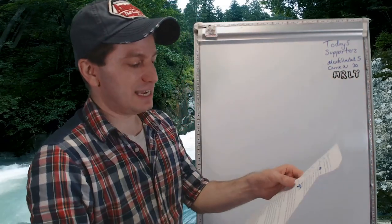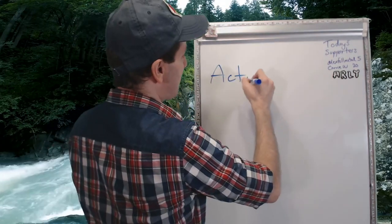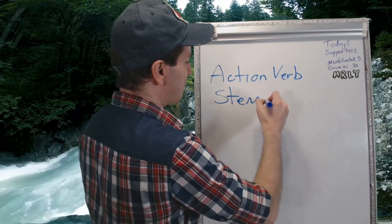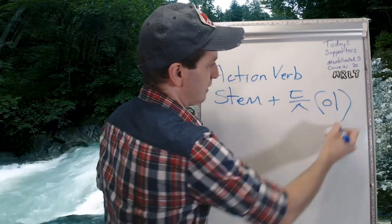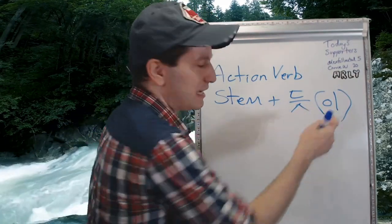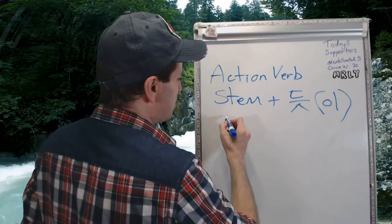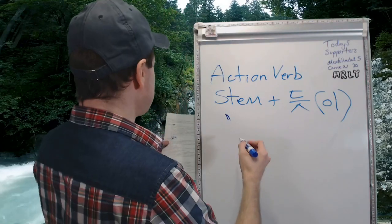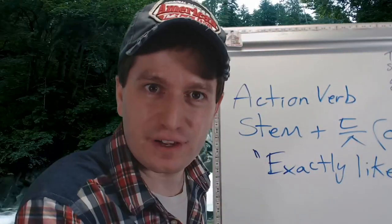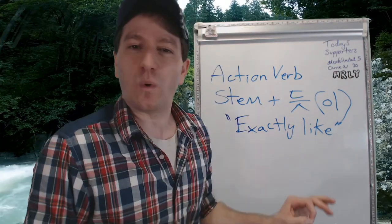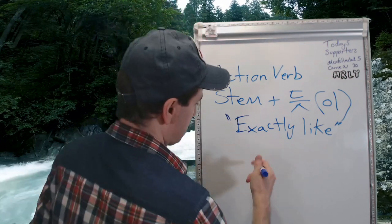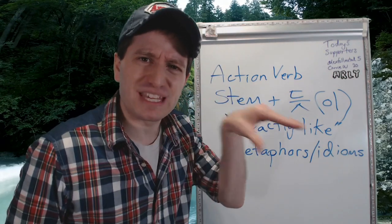The next form we're going to be using is the same thing but a different version that you might see, and that is also with an action verb. But this time, you're not going to change it into an adjective. You're going to take the action verb's stem and attach 듯 directly to it. And the way it works is the same. What's the difference then? This one is a little bit stronger. Instead of saying 'it's as if' or 'it's like,' it's more like saying 'this is exactly like,' 'just as if.' This is the form you're going to be using in metaphors or idioms, because it's a stronger, more direct way of saying that something is like something.